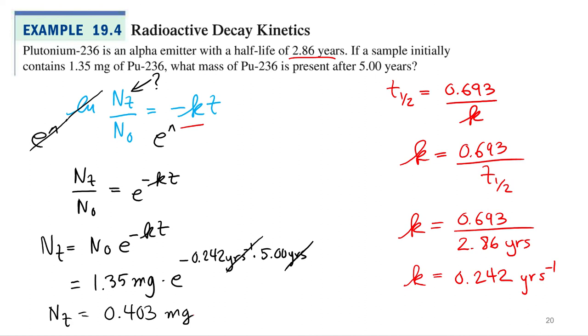So we started out with 1.35 milligrams. Now we have 0.403. Does that make sense? Should it go down? Yeah, so it's decaying. So if you ever get a larger number, that's one way to check your answer.